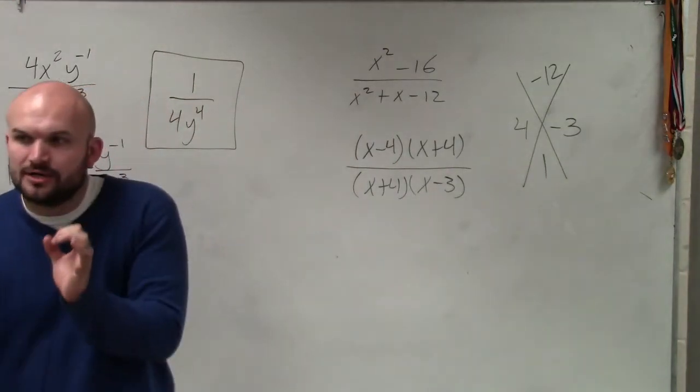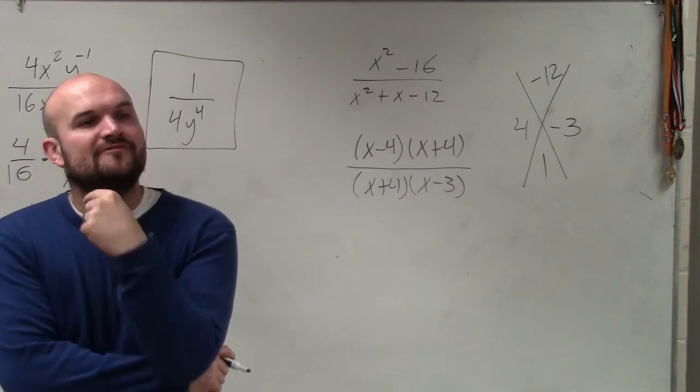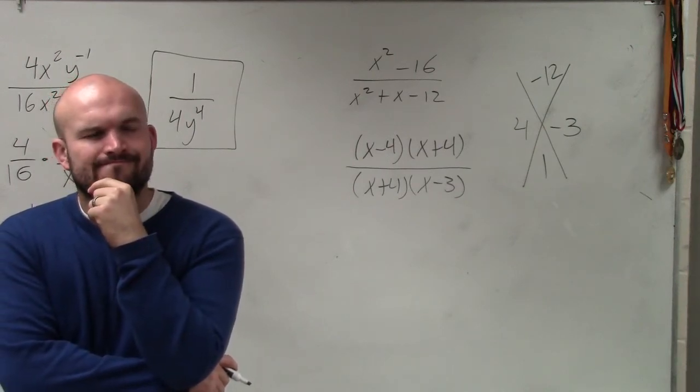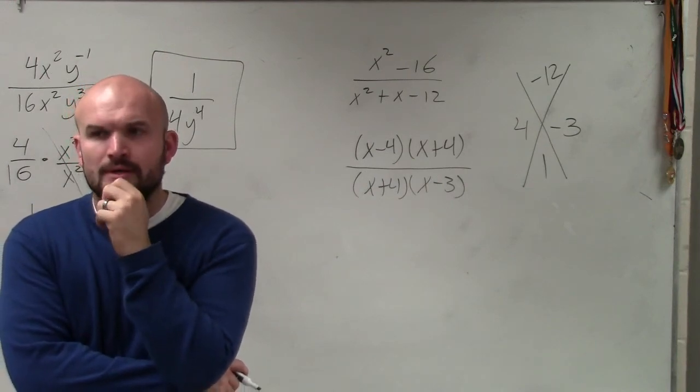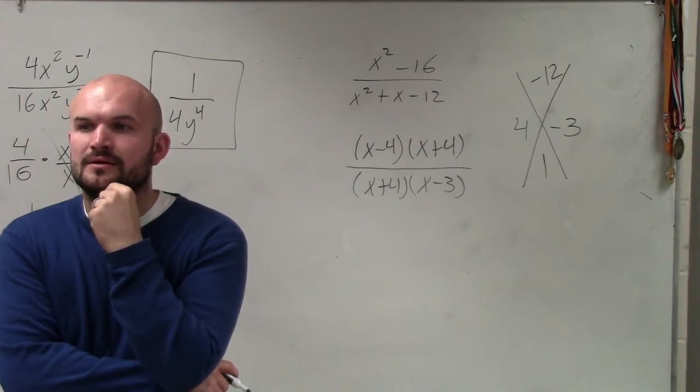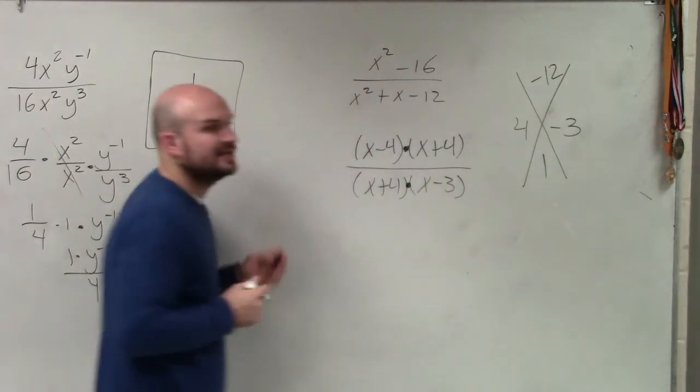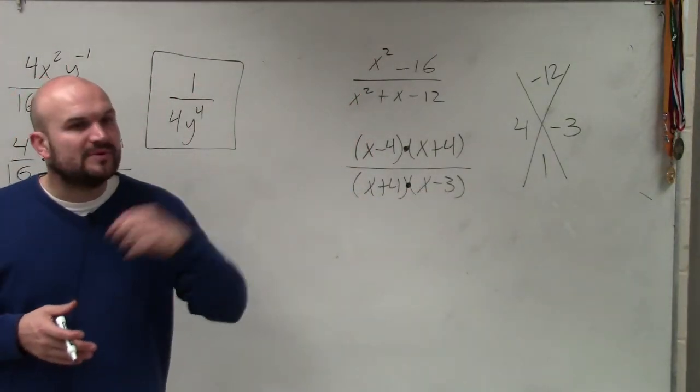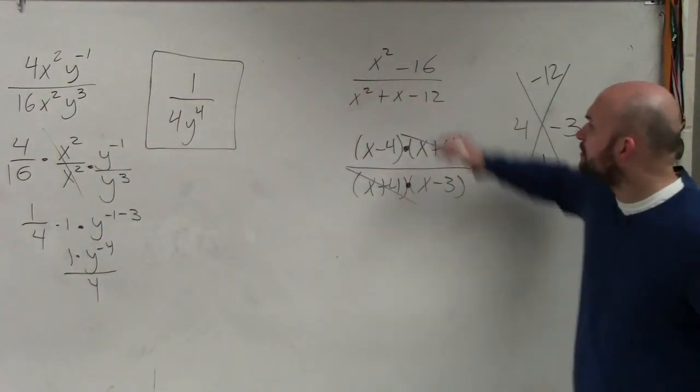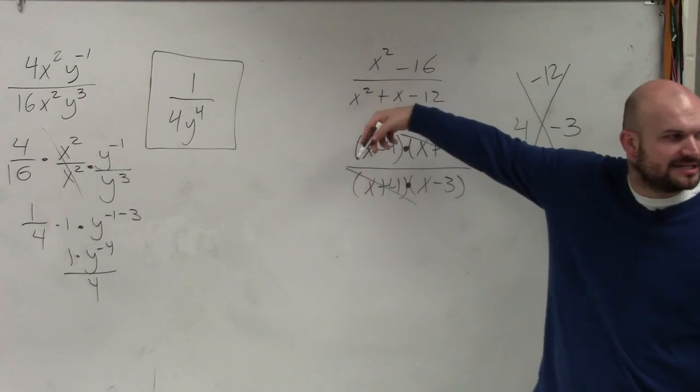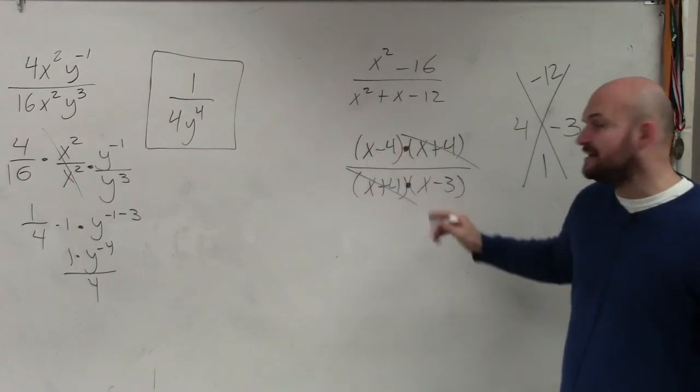Now, what I want you guys to understand is here's the very big distinction: by factoring, we have separated terms by multiplication. And now that we've separated terms by multiplication, we can divide them out. Where previously, we couldn't do that because they're separated by addition or subtraction. But now, since we've factored them, and now they're separated by multiplication, you can divide them out.